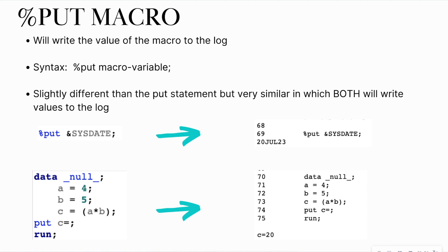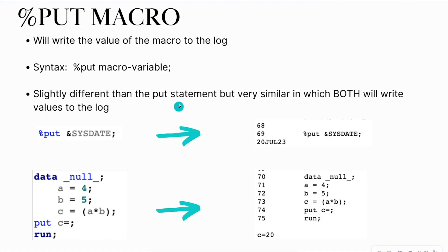Let's dive right into the percent put macro. The percent put macro, similar to the put statement, is going to write the value of a macro to the log. It's going to have that same syntax where we put the percent sign in front of it. If you see anything with a percent sign in front of it in SAS, nine times out of ten it's a macro. The syntax is percent put and then the name of the macro — slightly different than the put statement, but very similar in that you can write out items to the log.